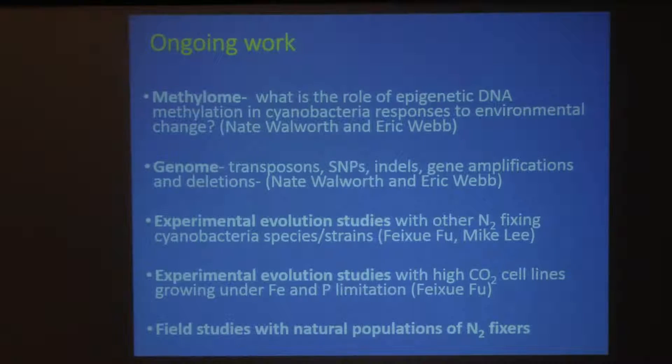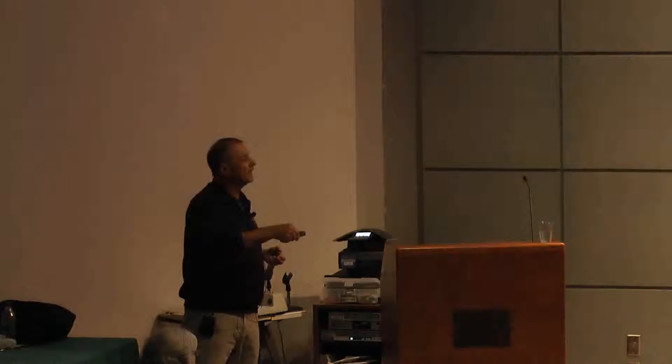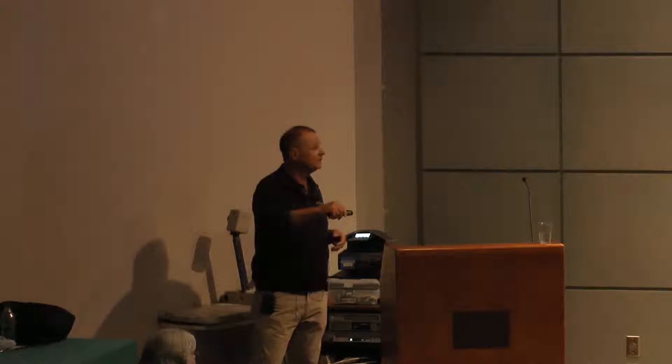We're also doing experimental evolution studies with other nitrogen-fixing cyanobacteria. We have a new graduate student, Mike Lee, who's doing Crocosphaera, because we'd like to see if it gets stuck in the fast lane too when you adapt it to high CO2. And we're continuing to look at how adaptation to high CO2 interacts with limiting nutrients like iron and phosphorus. We are not funded to do this, but I would like to get out and potentially find some markers for these things that we can look for in natural populations of nitrogen fixers — get out on the ship, look at populations in the real ocean, do some manipulative experiments, and see if we can see gradients in these responses as we cross from a high iron area to a low iron area.